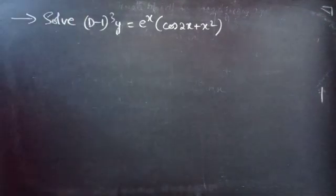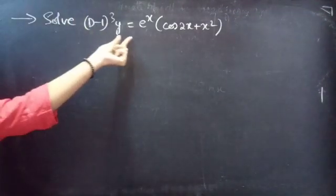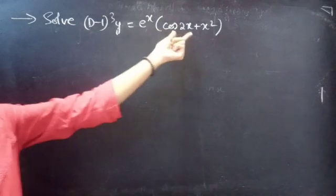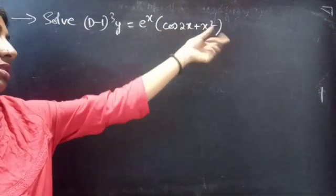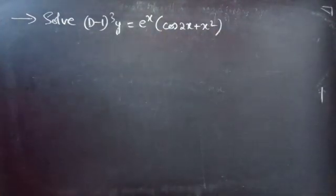Problem: solve (D minus 1) whole cube into y equals to e power x into cos 2x plus x squared.